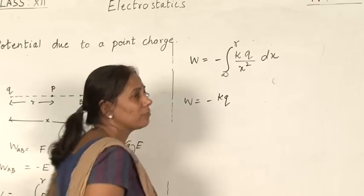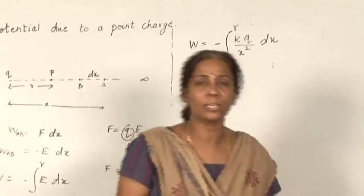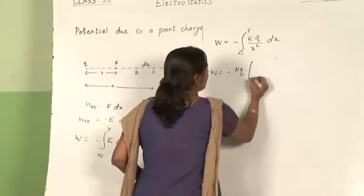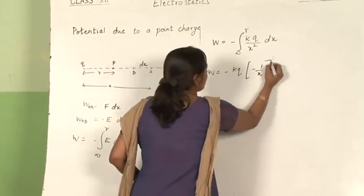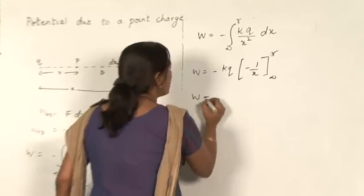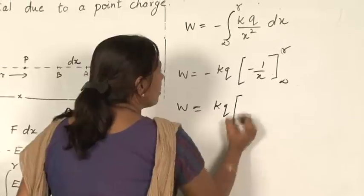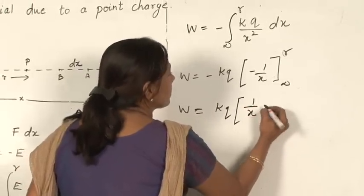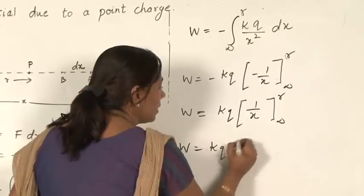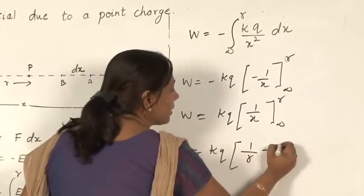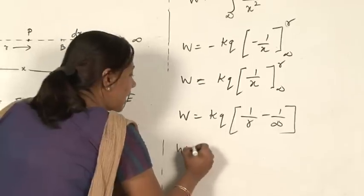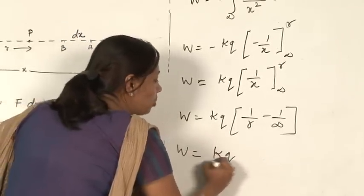This k and q is constant. 1 by x square, if I integrate, what I will get is minus of 1 by x. So, that minus and minus we will take — it will become plus of 1 by x from infinity to r. So, if I calculate it further, this is 1 by r minus 1 by infinity. 1 by infinity is 0. So, the work done I am getting is k q by r.